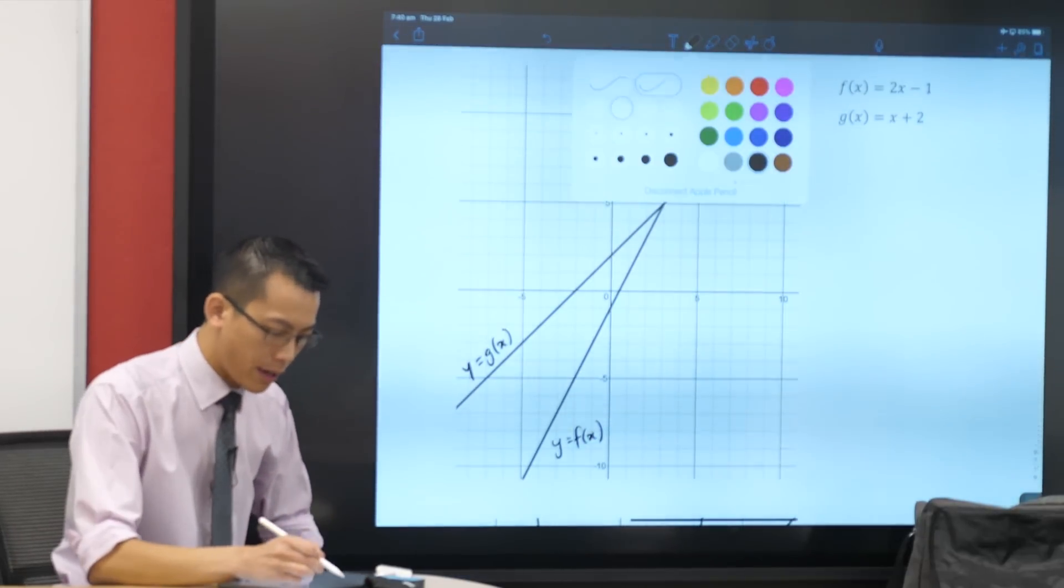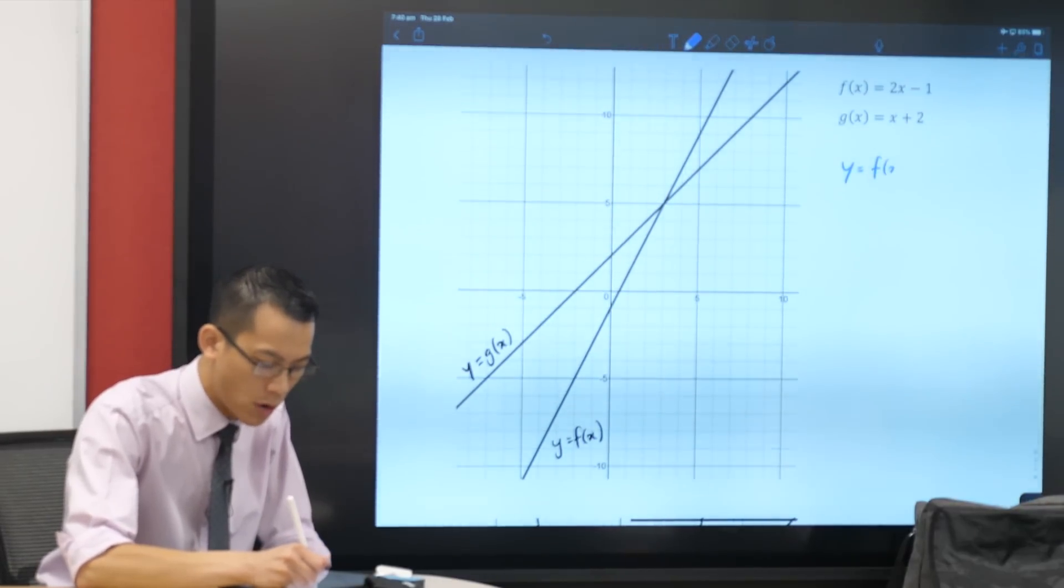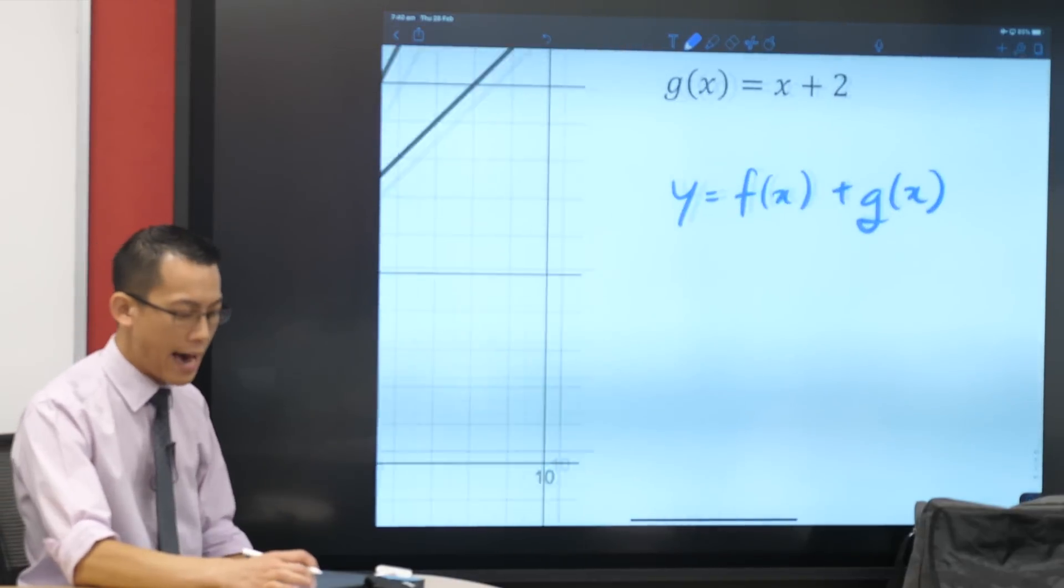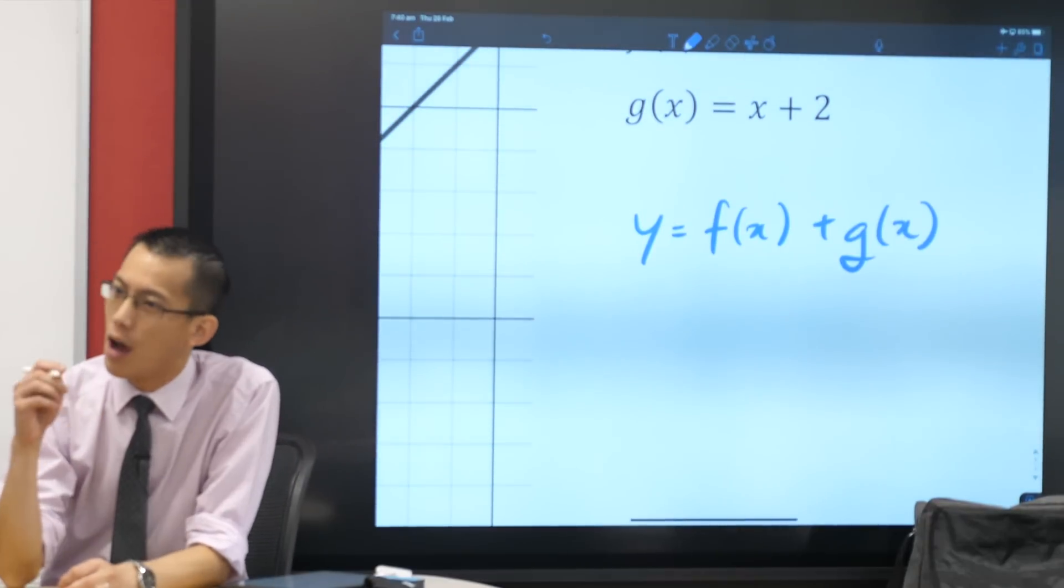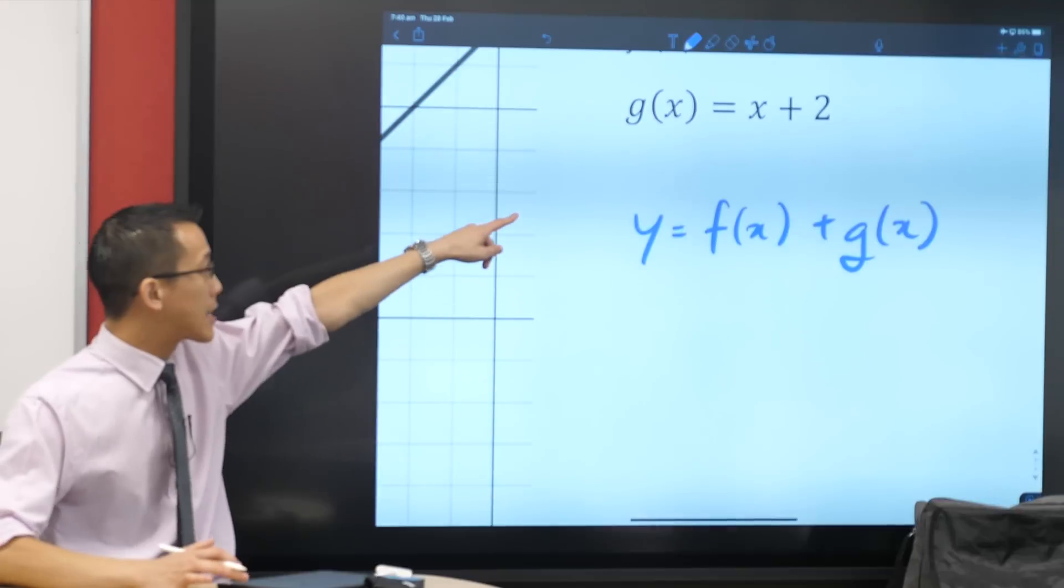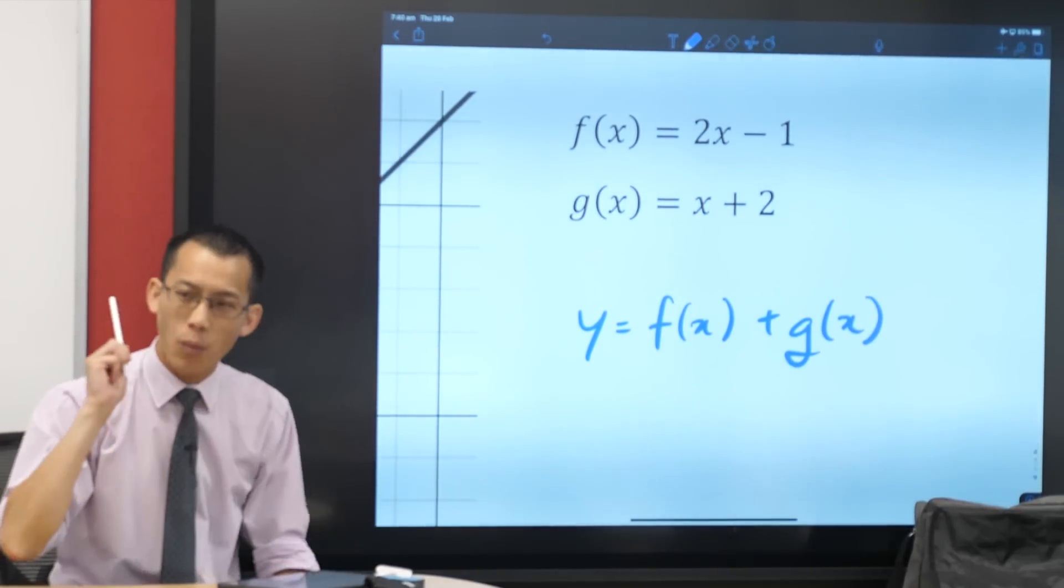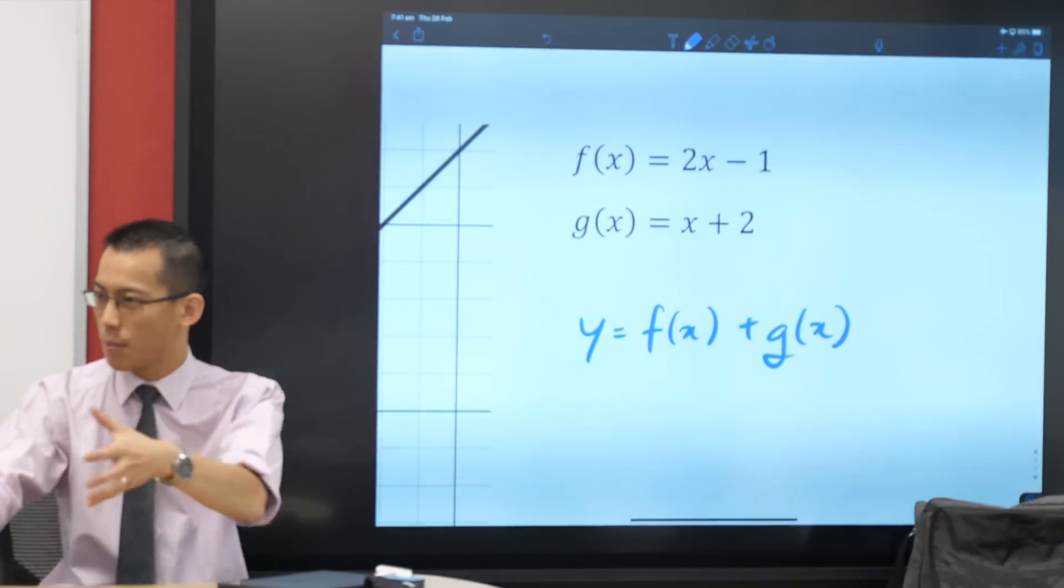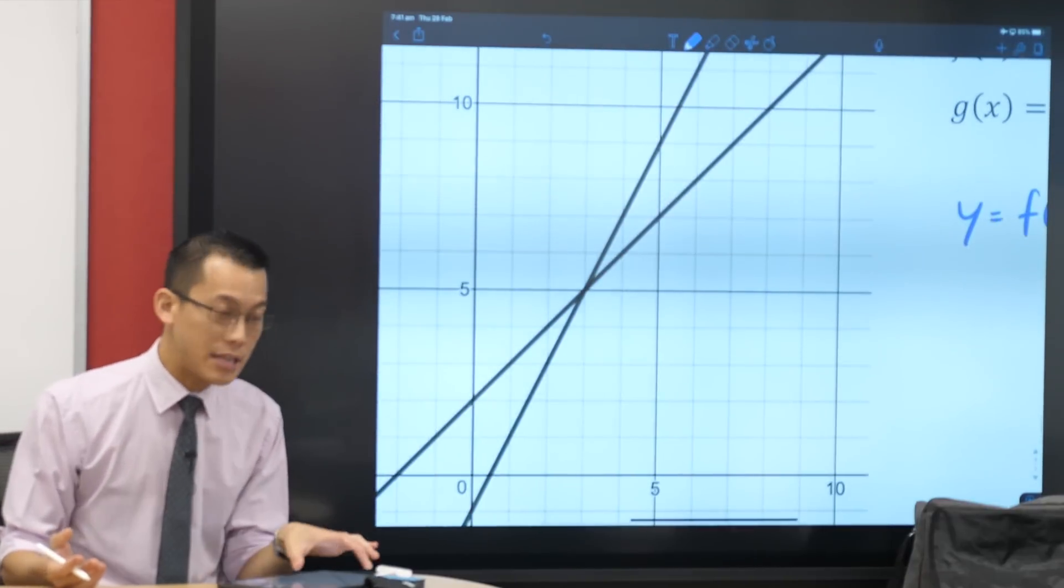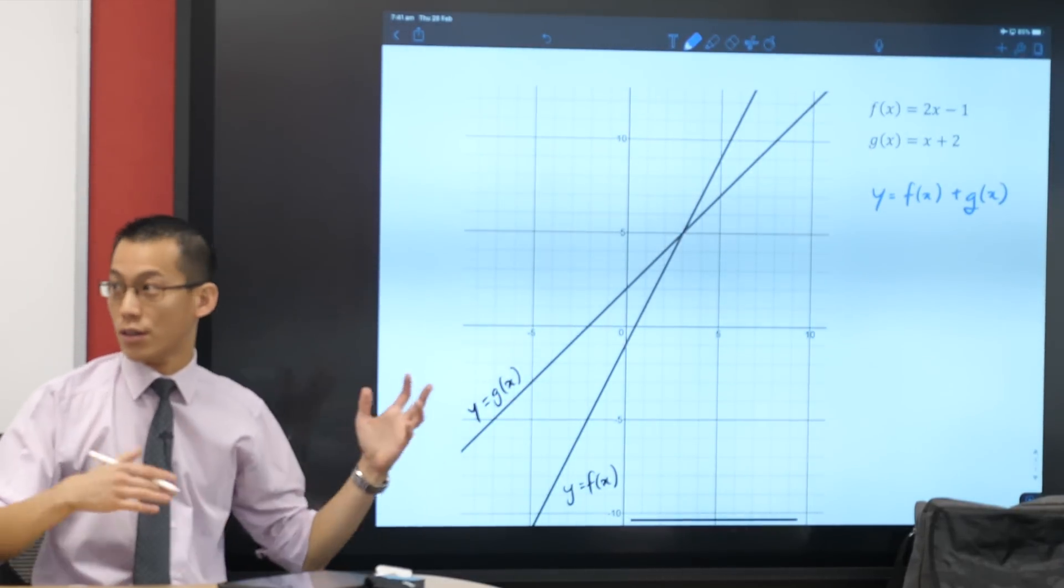Now, what I'm going to do here is I want to think about what does y equals the sum, what happens if I add these up? f of x plus g of x. What would that look like? I already know that you could algebraically add these together. You'd get a new y equals whatever, and then you could graph that.